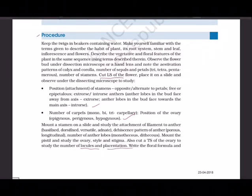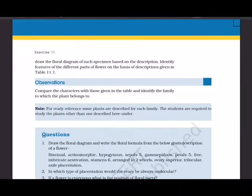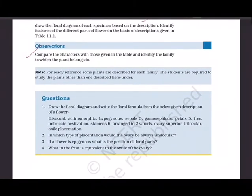Write the floral formula and draw the floral diagram based on your observations. Identify features of different parts of the flower based on descriptions given in Table 1.1. Tabulate your observations, compare the characters with those given in the table, and identify the family to which the plant belongs. This is your result. Then write the precautions you took.